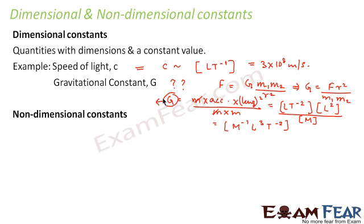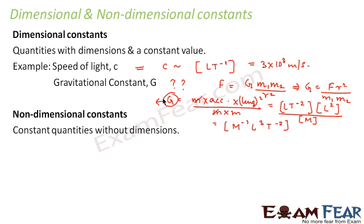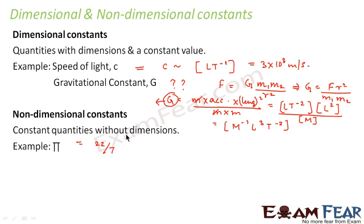There are also non-dimensional constants — quantities whose values are constant and which have no dimension at all. For example, pi (π) has the constant value of 22/7 and does not have any dimension.